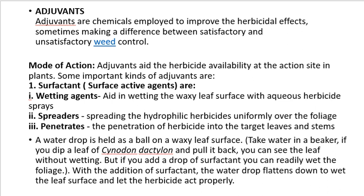Wetting agents act as follows — for example, a water drop is held as a ball on a waxy leaf surface. Take water in a beaker; if you dip a leaf of Cynodon dactylon and pull it back, you can see the leaf without wetting. But if you add a drop of surfactant, you can readily wet the foliage. With addition of surfactant, the water drop flattens down to wet the leaf surface and lets the herbicide act properly.